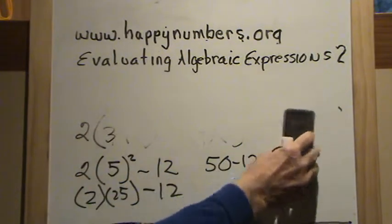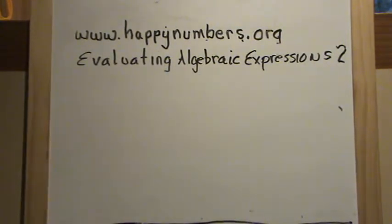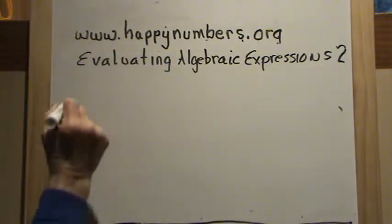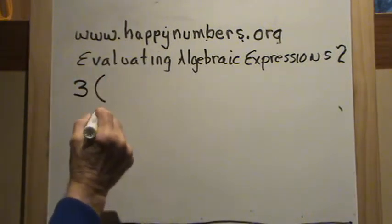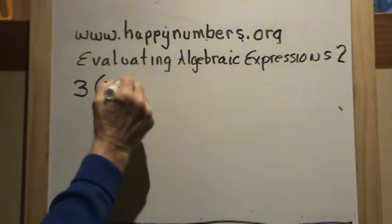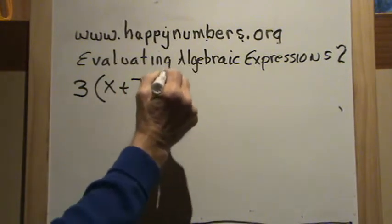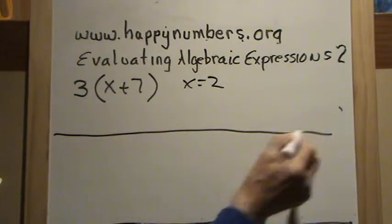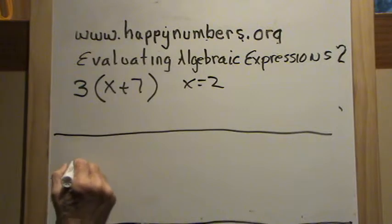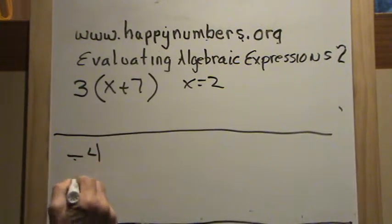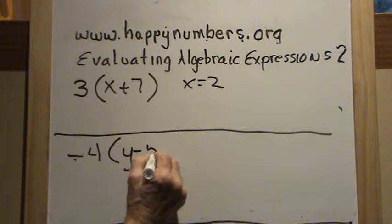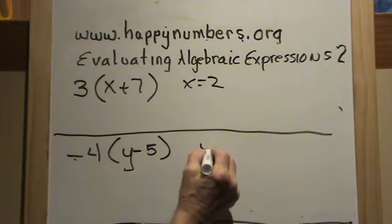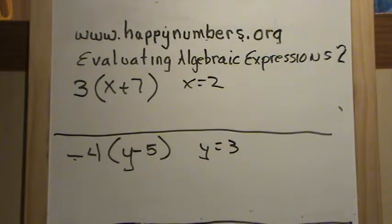I'll put a couple of problems up for you. First: 3 times the quantity x plus 7, and x equals 2. Second: negative 4 times the quantity y minus 5, and y equals 3. Put your video or DVD on pause, work those problems, and then turn it back on and we'll work them together.